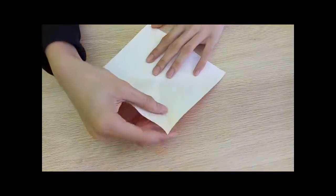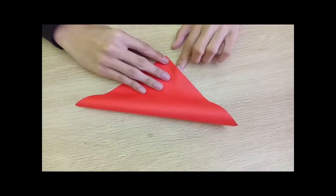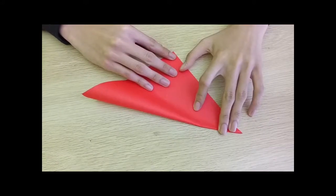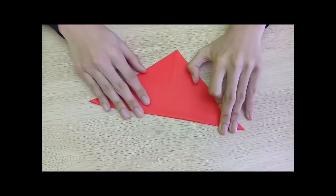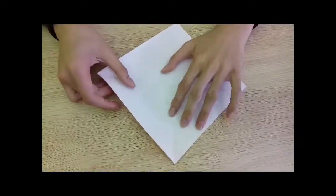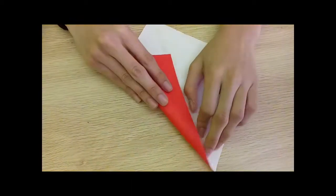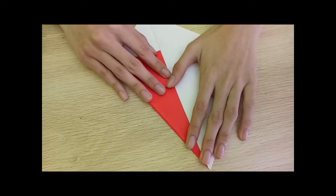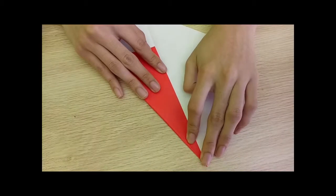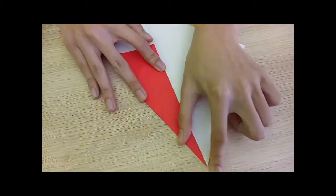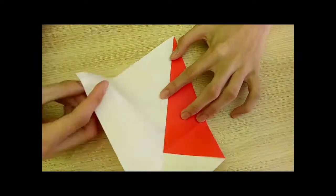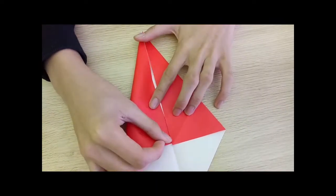And then do it with the other side. So now what you want to do here is fold it into the middle, so it should look like this, or to the very corner. And then do it with the same side, so it should look like this.